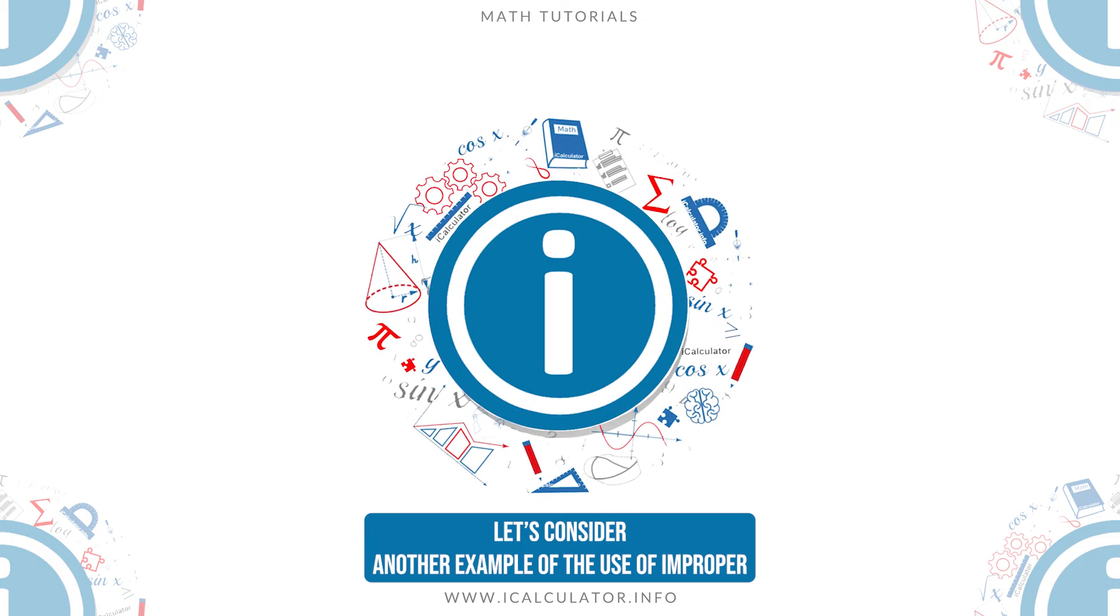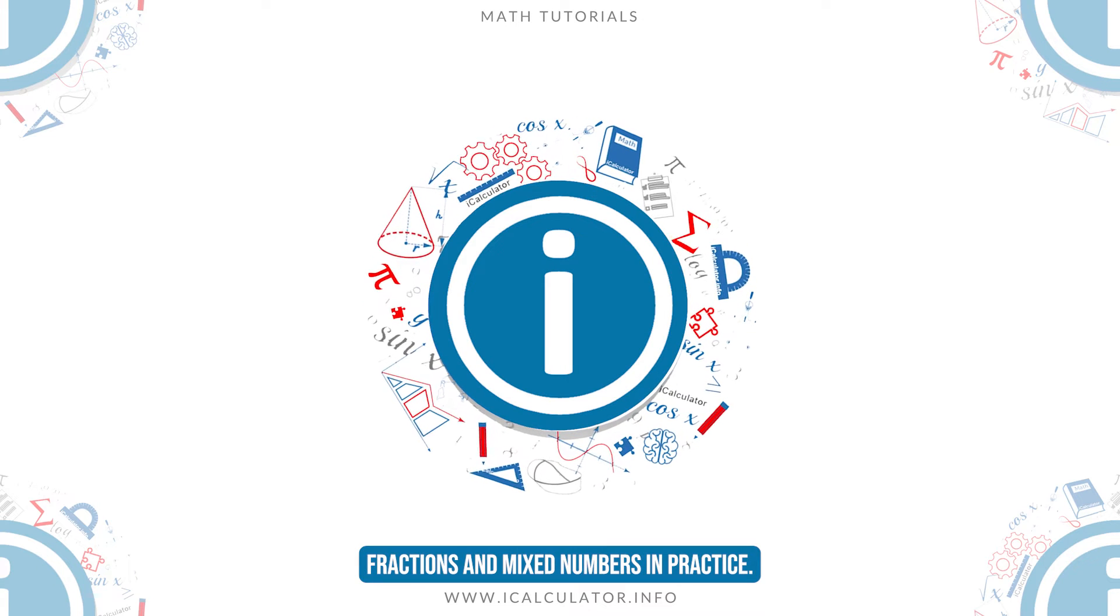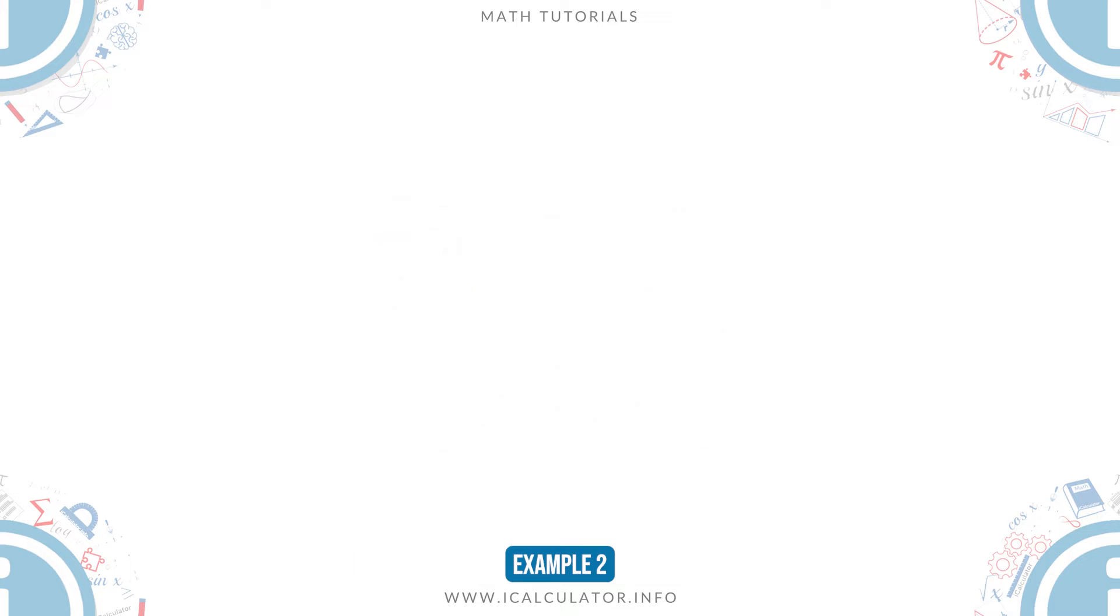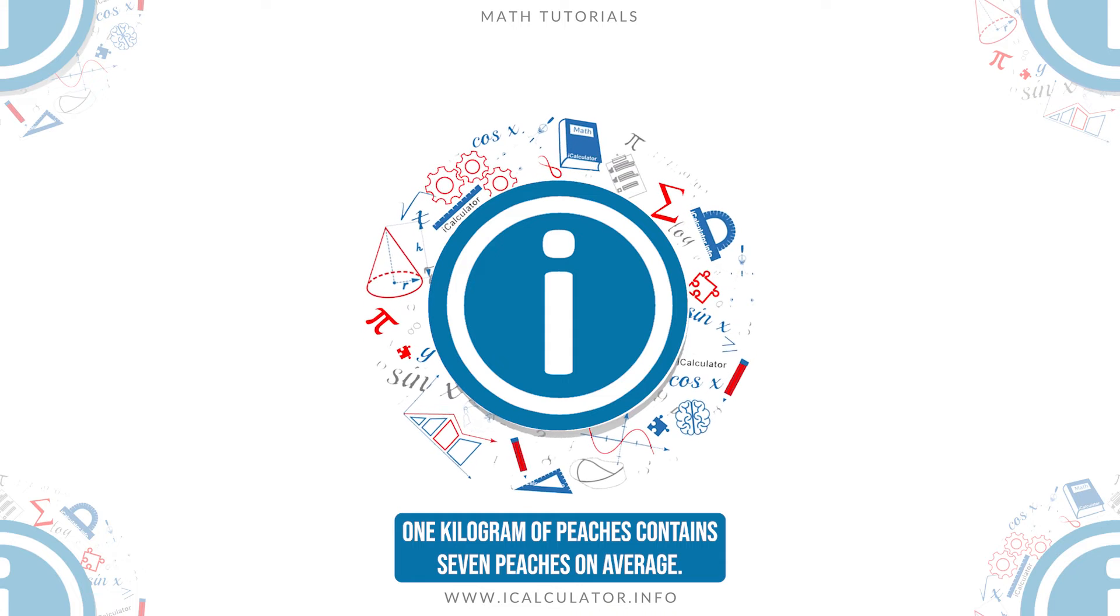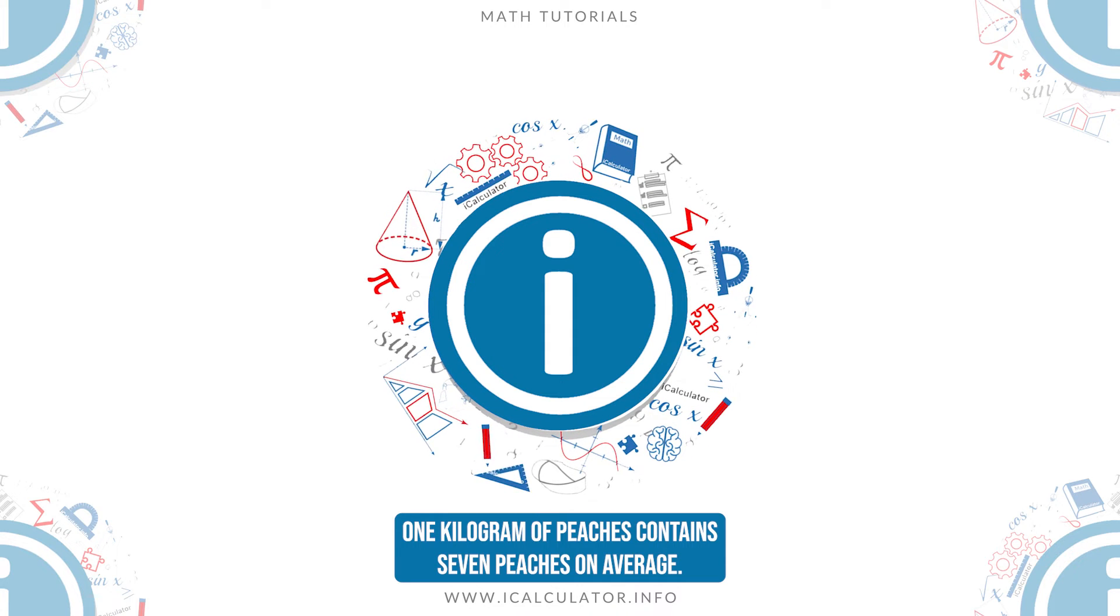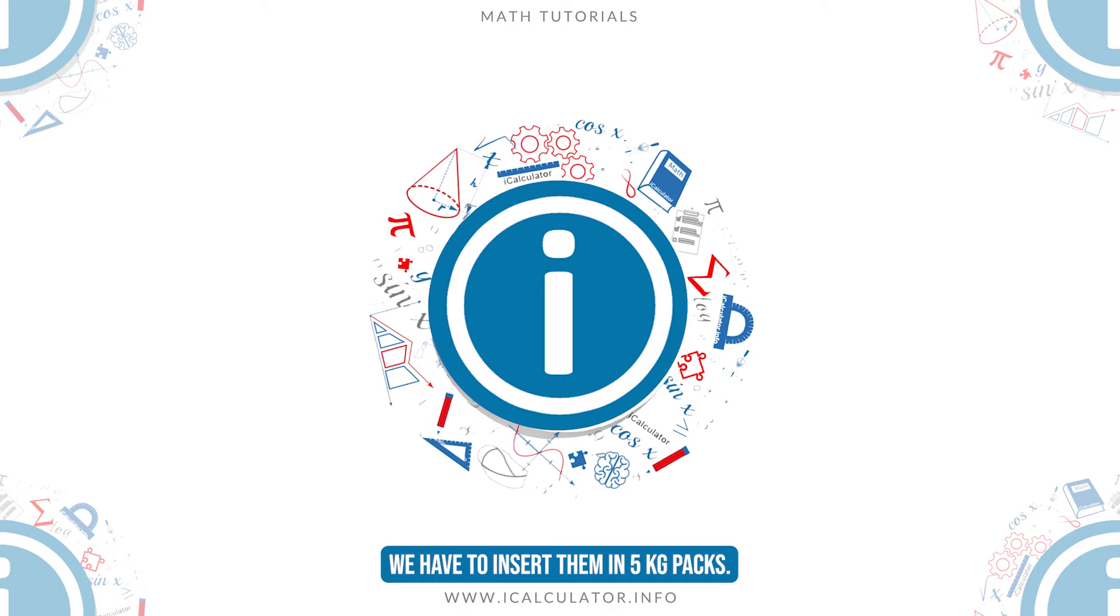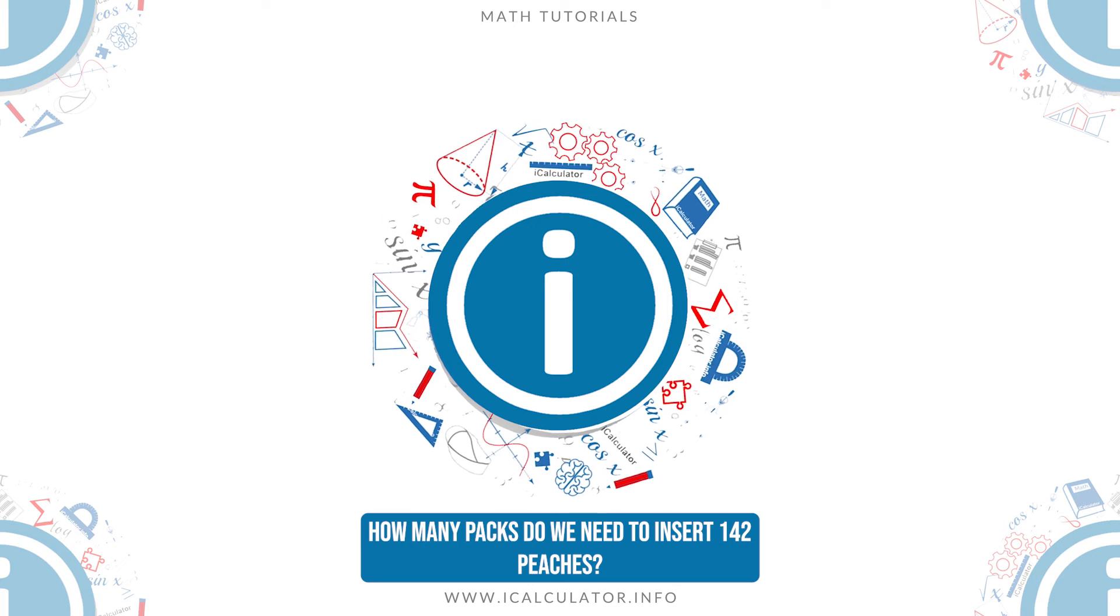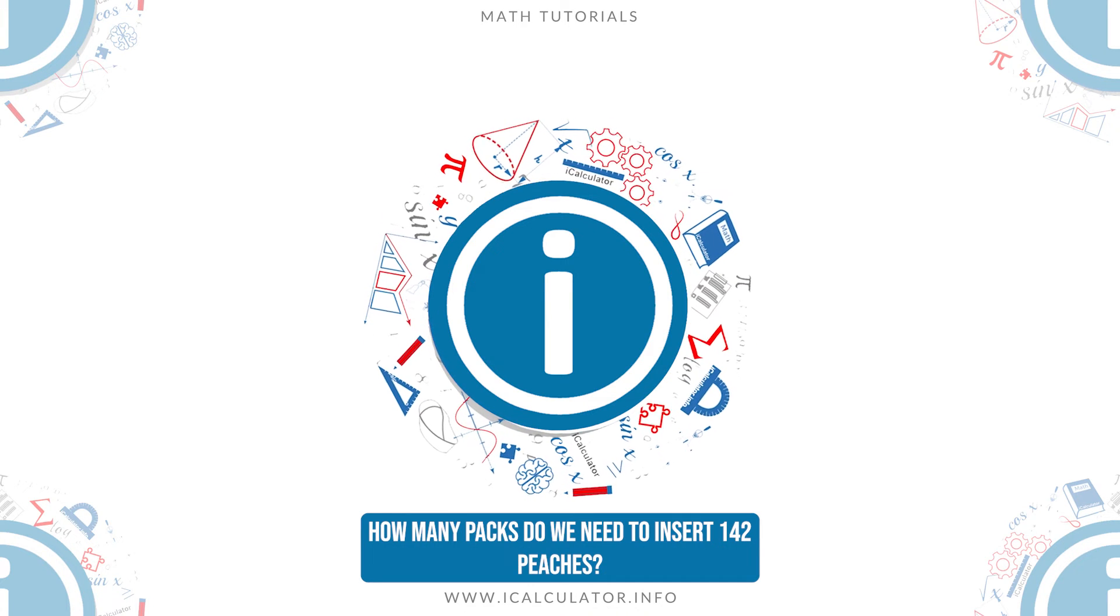Let's consider another example of the use of improper fractions and mixed numbers in practice. Example 2. 1 kg of peaches contains 7 peaches on average. We have to insert them in 5 kg packs. How many packs do we need to insert 142 peaches?